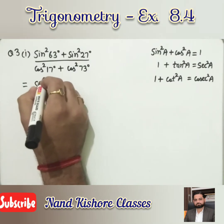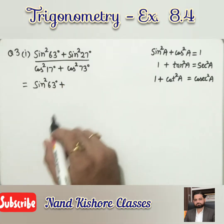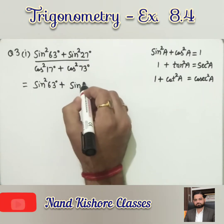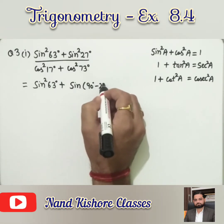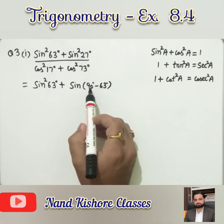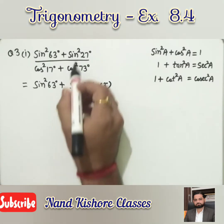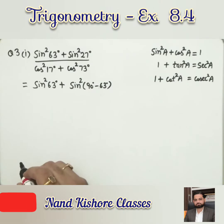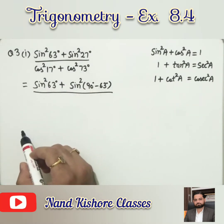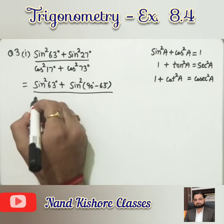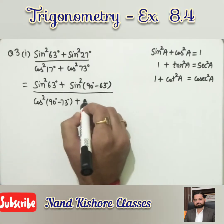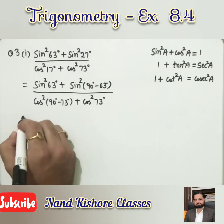What I am going to do: sin²63° I leave as it is, but I am going to convert sin27° into cos. How? 27 can be written as 90 − 63, and the square stays as it is. In the denominator, 17 and 73 sum to 90, so I can change cos17° by writing 17 as 90 − 73, plus cos²73°.